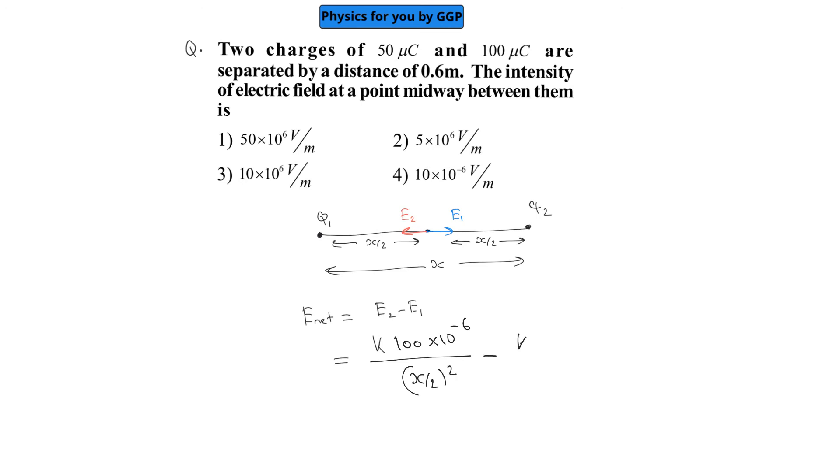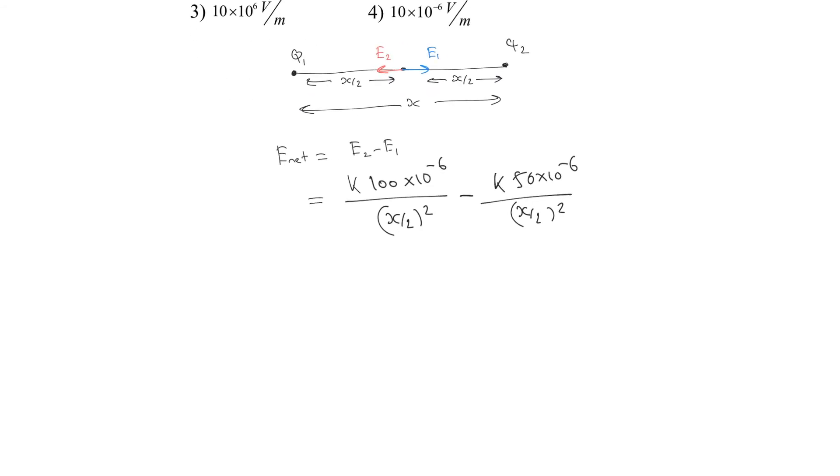Minus K into another one, 50 into 10 raised to minus 6, divided by X by 2 the whole square. So we can take it as K into 10 raised to minus 6, the remaining thing is 100 minus 50.